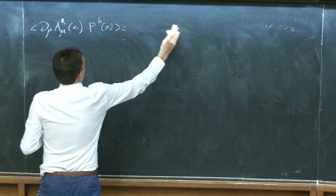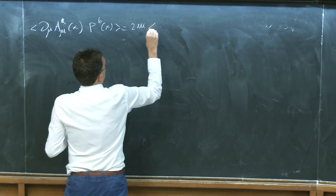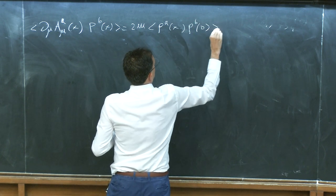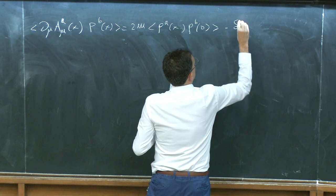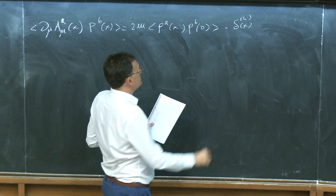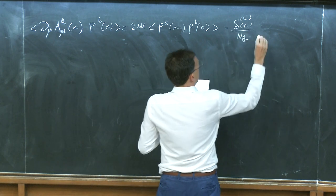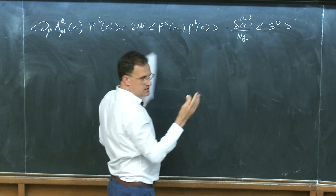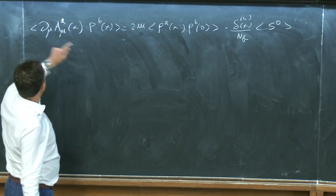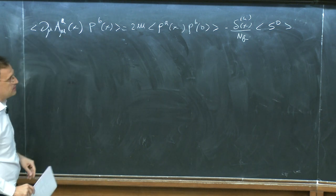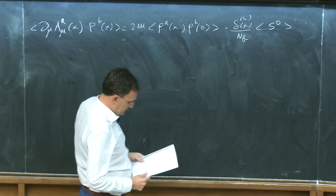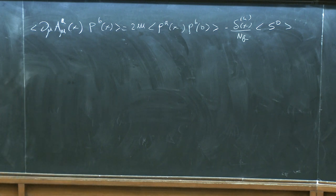We start from the non-singlet Ward identity, not the integrated version, which we saw this morning. The non-integrated version can be derived similarly. For continuum notation for ~10 minutes: ∂_μ⟨A_μ^a(x) P^b(0)⟩ = 2m⟨P^a(x) P^b(0)⟩ − (δ^{ab}/N_f)⟨s(0)⟩·δ⁴(x). Integrating over x and the delta function gives the identity from this morning.